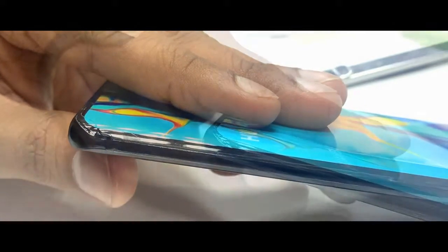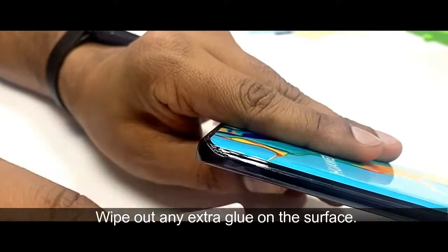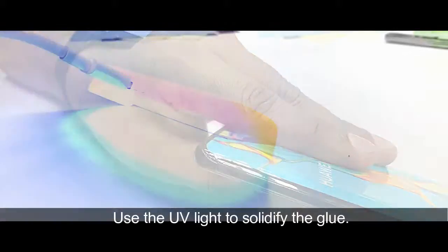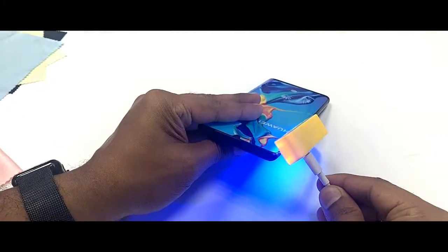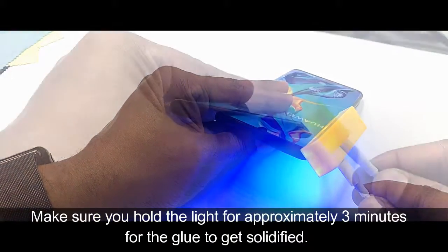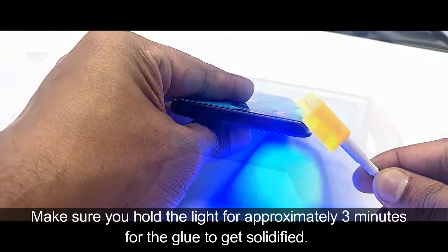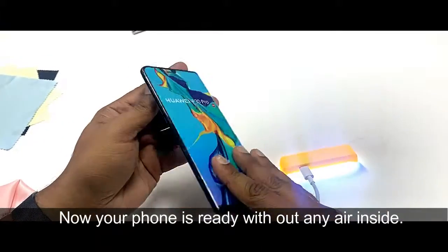Wipe out any extra glue on the surface. Use the UV light to solidify the glue. Make sure you hold the light for approximately three minutes for the glue to get solidified. Now your phone is ready without any air inside.